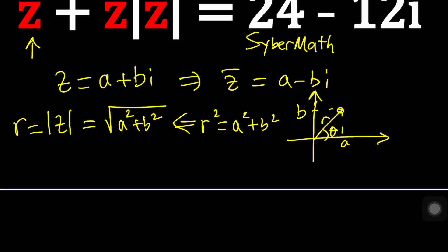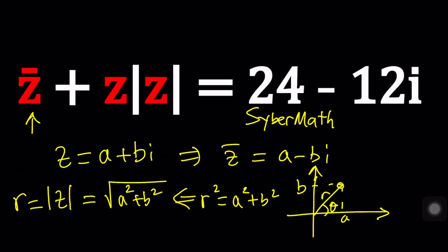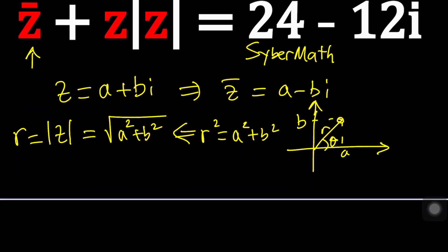Now what are we going to do with this? Plug everything in. I did not solve the problem myself because I came up with the problem so I kind of went backward. But now you're going to go forward and you're going to understand my reasoning. So z̄ is A minus BI plus z is A plus BI. And then we're going to multiply it by the absolute value which is the square root of A squared plus B squared. And that should equal 24 minus 12i.